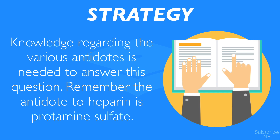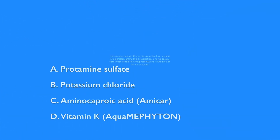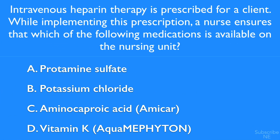Remember, the antidote to heparin is protamine sulfate. Now that you know what each of these medications is used for, we can answer this question correctly. In this case, there is only one possible answer. If you chose option A, protamine sulfate, you chose correctly.